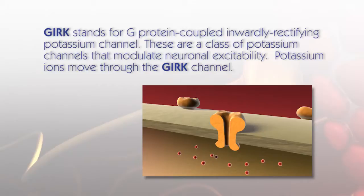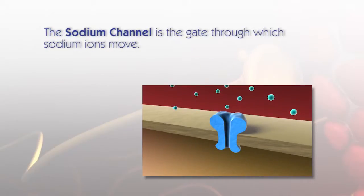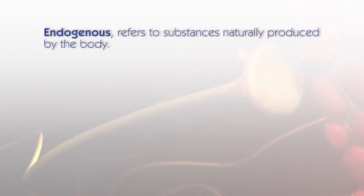GIRK stands for G-protein coupled inwardly rectifying potassium channel. These are a class of potassium channels that modulate neuronal excitability, and potassium ions move through the GIRK channel. The sodium channel is the gate through which sodium ions move. Endogenous refers to substances naturally produced by the body.